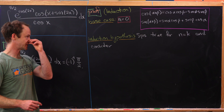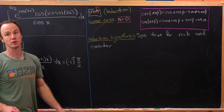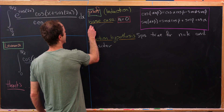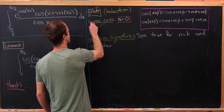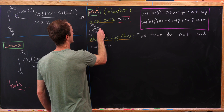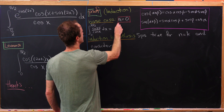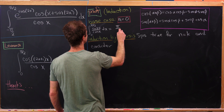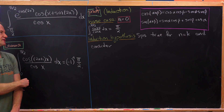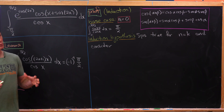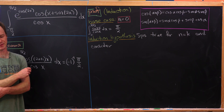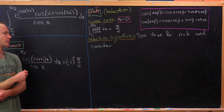Let's start with the base case, n equals 0. For n equals 0, our integral becomes the integral from 0 to pi over 2 of cosine of x over cosine of x dx. That's just the integral of 1 dx from 0 to pi over 2, which gives us pi over 2 — or nominally, negative 1 to the 0 power times pi over 2.